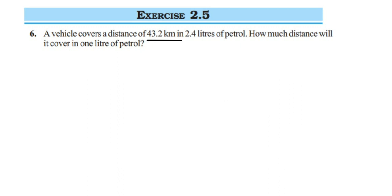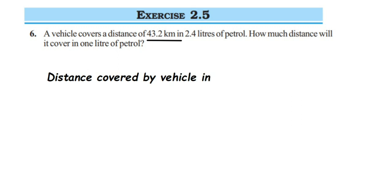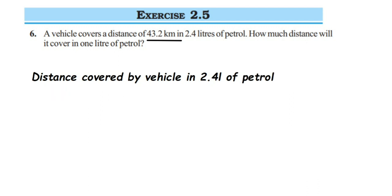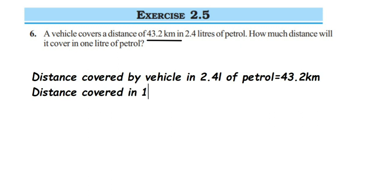Let's write down what is given in the question. Distance covered by vehicle in 2.4 liters of petrol is equal to 43.2 kilometers. Now we have to find out the distance traveled in one liter of petrol. Therefore, distance covered in one liter of petrol will be equal to...